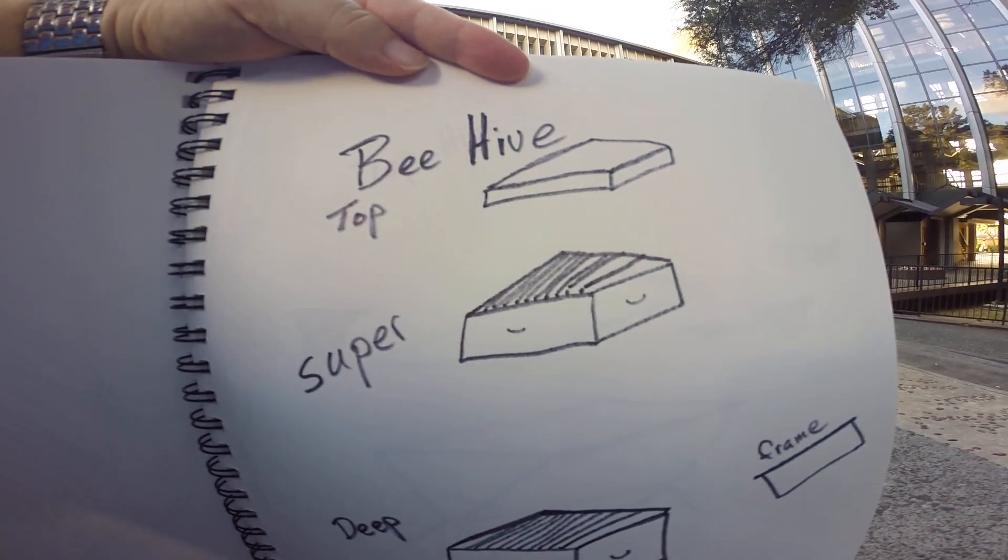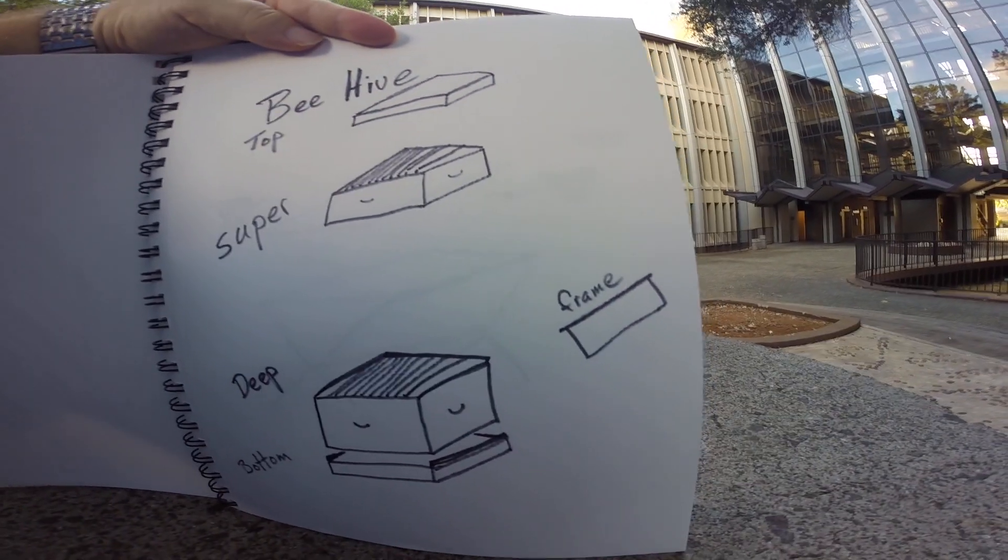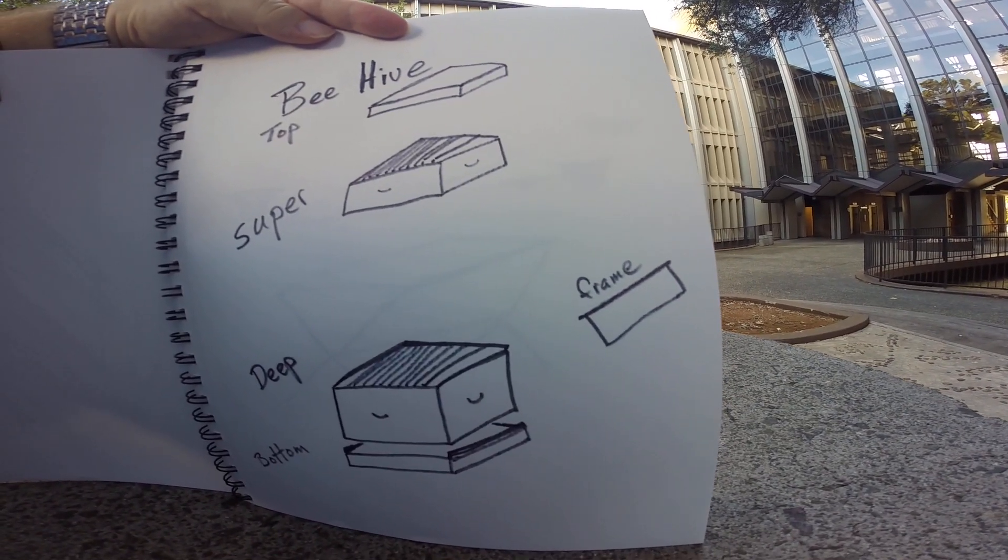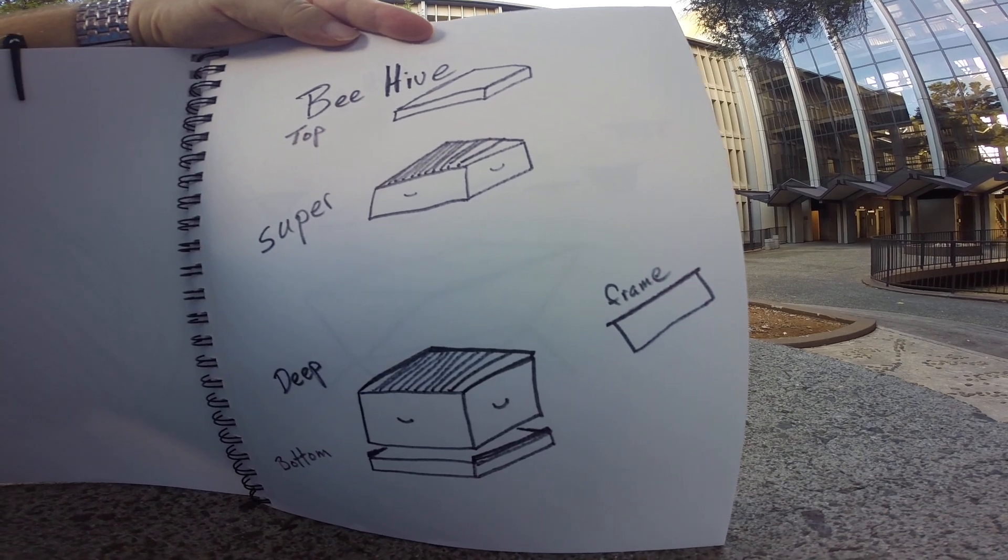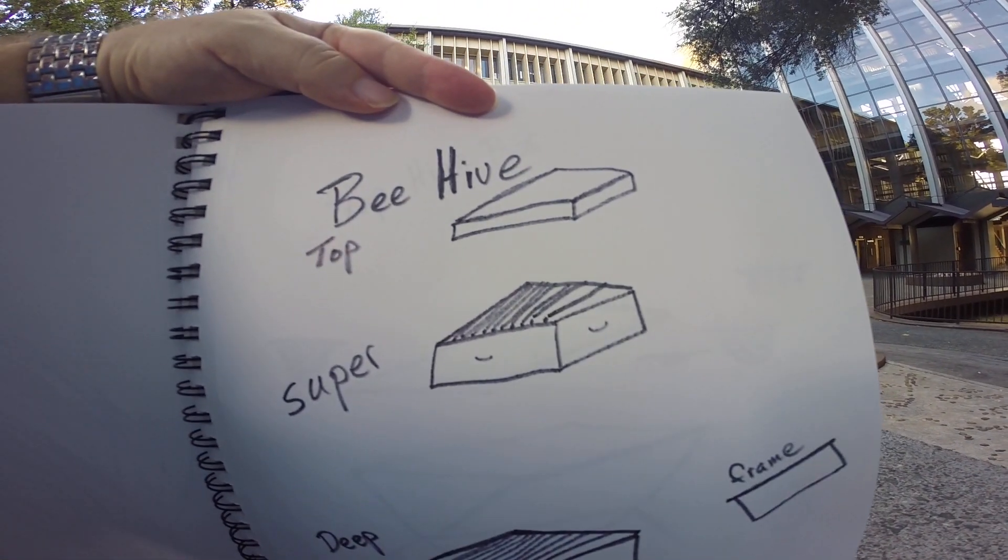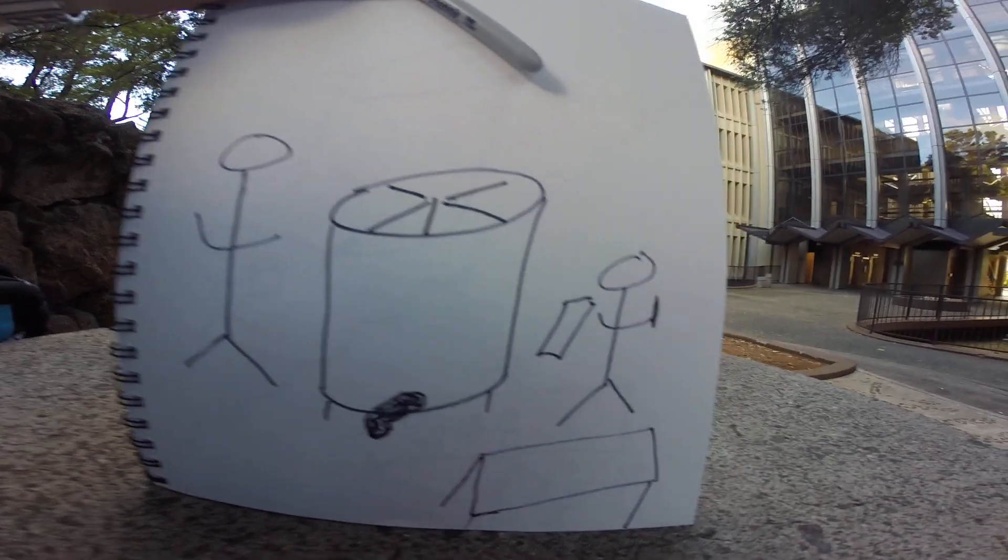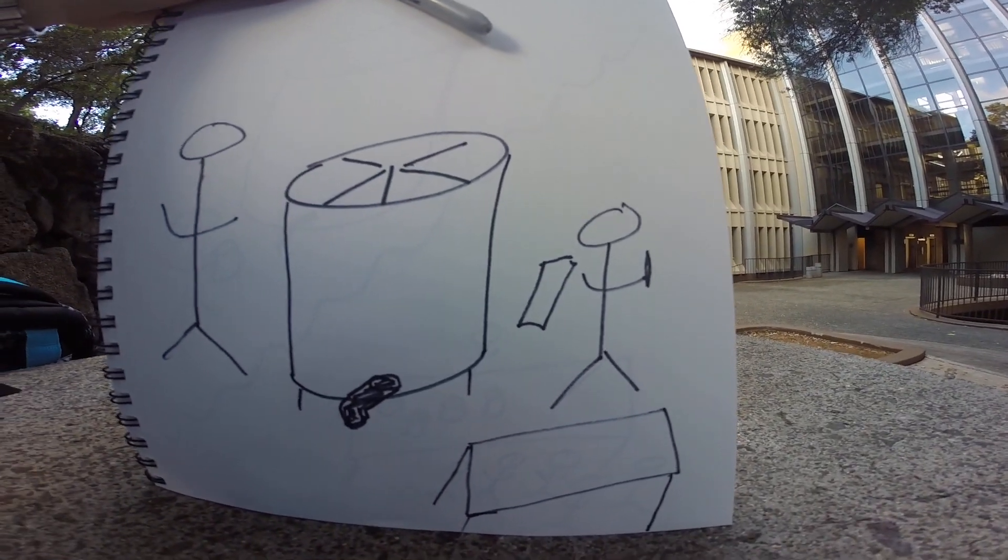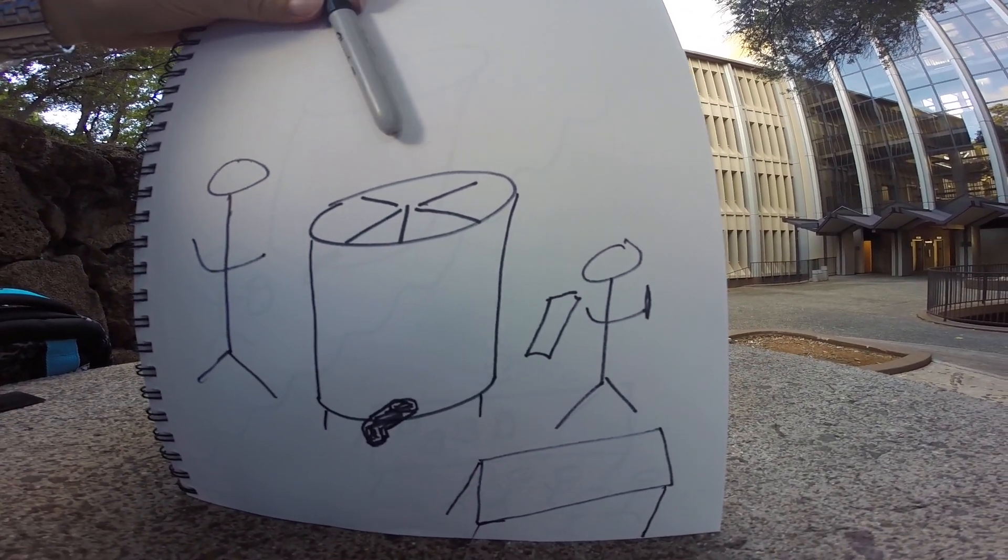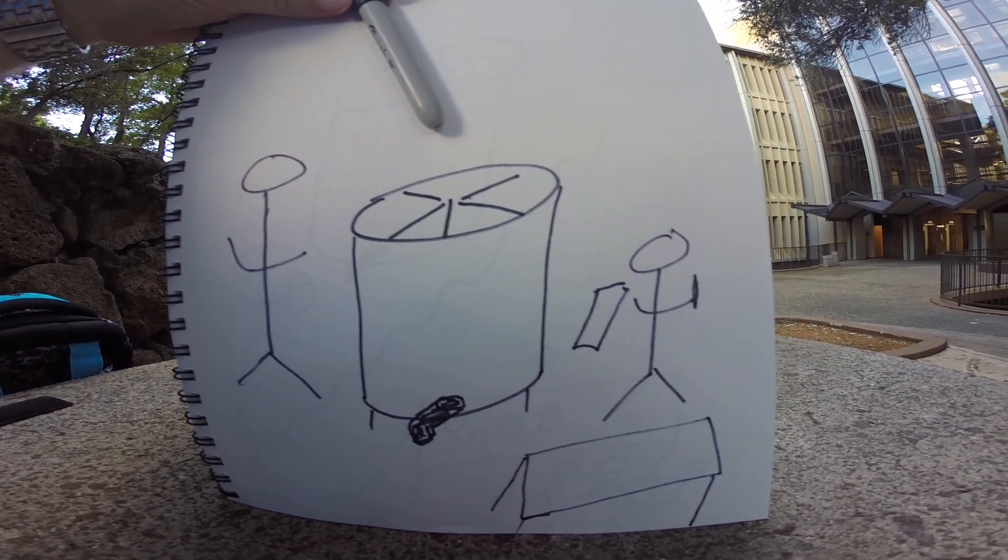The reason hobbyist and commercial beekeepers use traditional frames in a standard size is that when making honey, beekeepers usually use an extractor to spin out the honey.